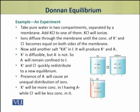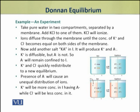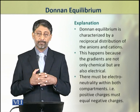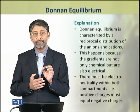Potassium and chloride ions quickly redistribute and establish a new equilibrium. Because of anion A being confined to compartment 1, the distribution of ions becomes unequal between the two compartments. Potassium ions will be more concentrated in compartment 1, which has anion A, while chloride ions will be less concentrated in this compartment.